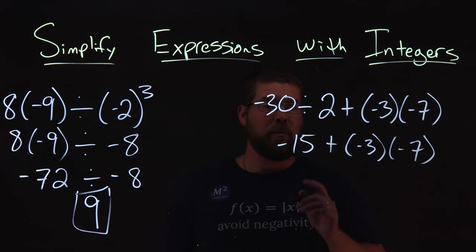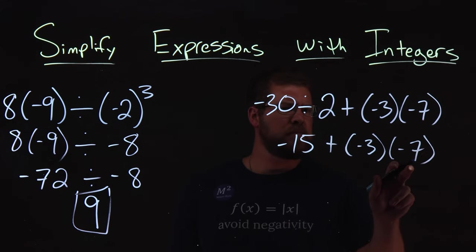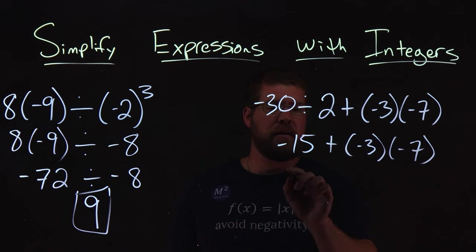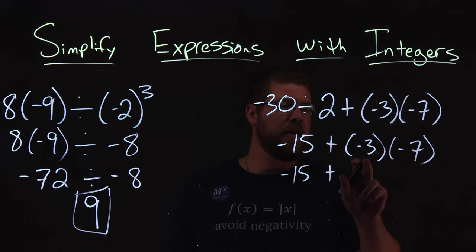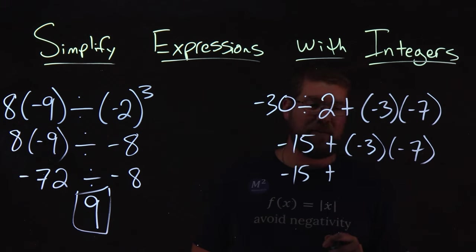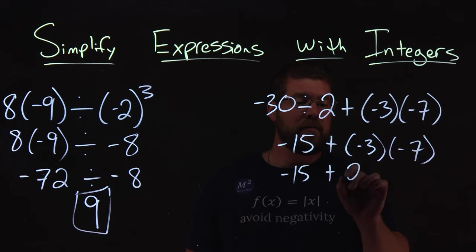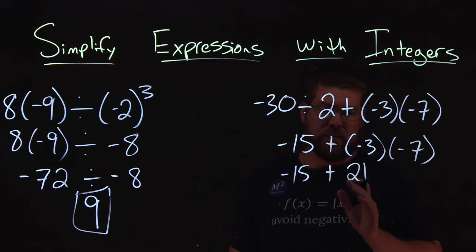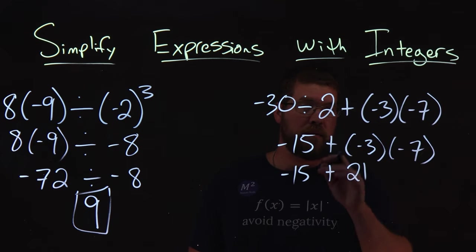Well, then from here, what we want to do is, we have a multiplication. So we see that multiplication is happening here first. So negative 15 comes out, plus negative three times a negative seven comes out to be a positive 21. Because remember, two negatives being multiplied equal a positive.